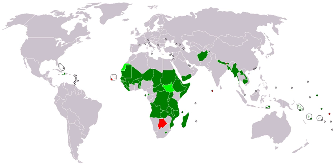Instead, the World Bank classifies countries into four groups based on gross national income per capita, reset each year on July 1. In 2016, the four categories in U.S. dollars were: low-income countries at $995 or less; lower-middle-income countries at $996 to $3,895; upper-middle-income countries at $3,895 to $12,055; and high-income countries at $12,056 and above.